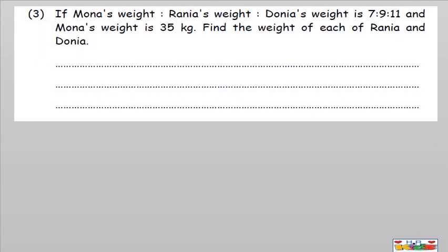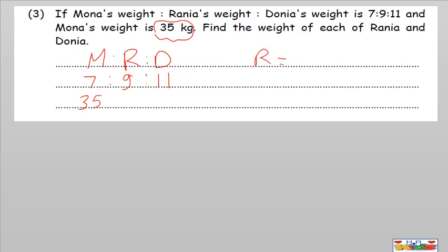Question number three: if Mona's weight to Rania's weight to Donia's weight — the ratio between them is seven to nine to eleven — and Mona's weight is 35 kilograms. This time we are given Mona's number: 35 kg. Find the weight of Rania and the weight of Donia.